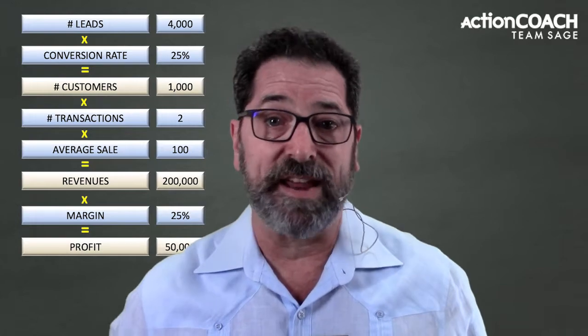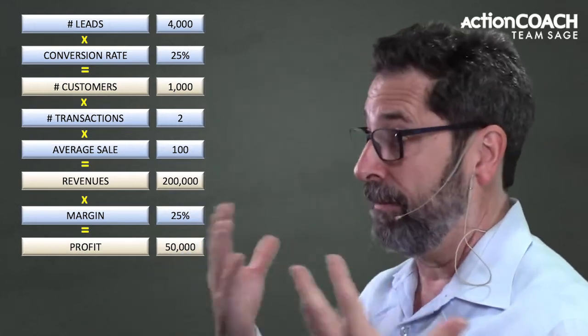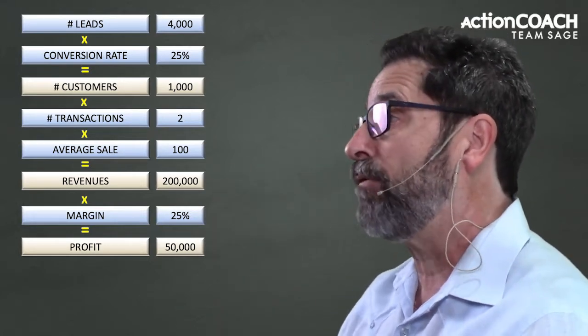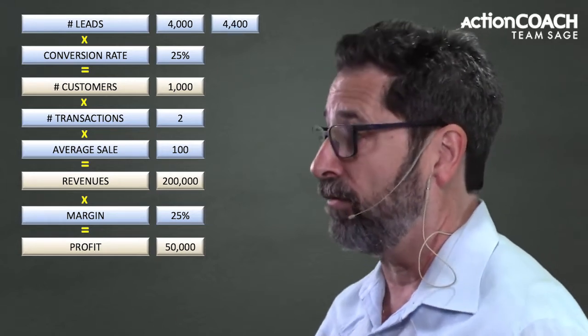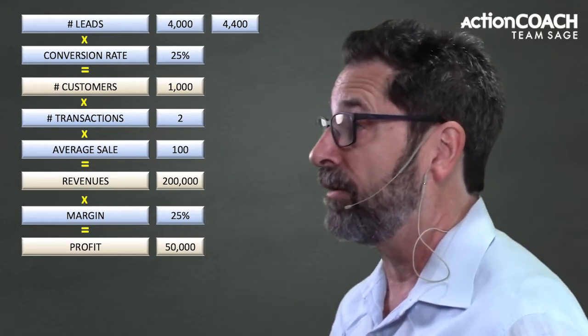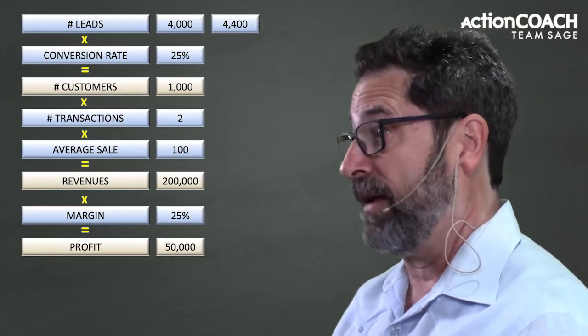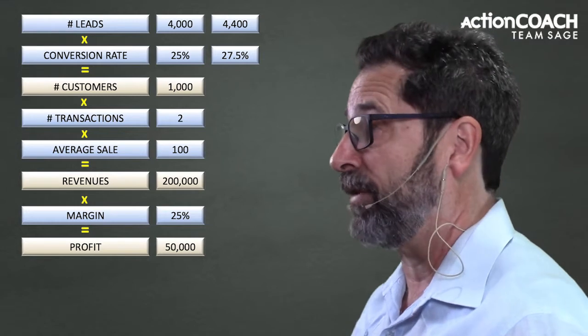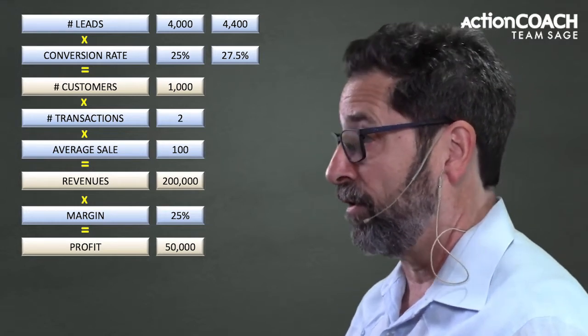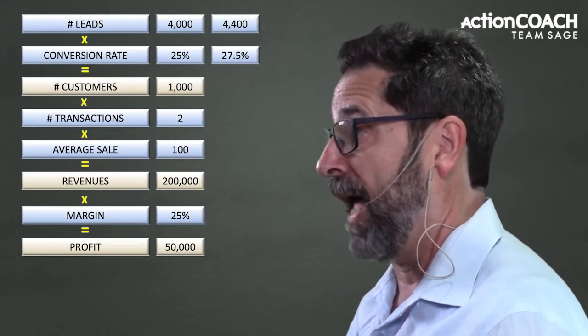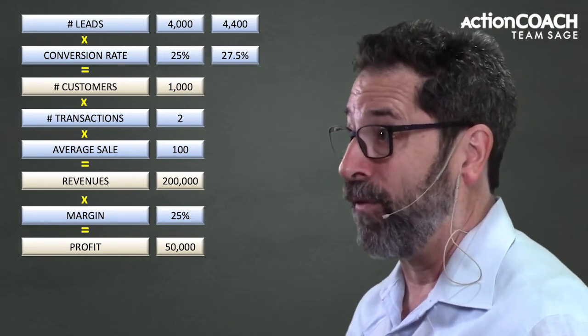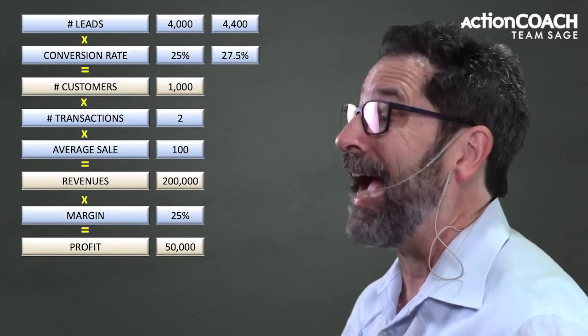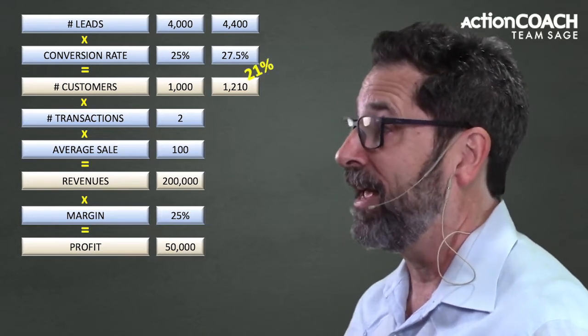Why is it important to split this up? If we focus on each area and grow each by just 10%: our 4,000 leads grow to 4,400; our 25% conversion rate rises by 2.5% to 27.5%. If you raised customers alone by 10%, you'd have 1,100. But multiplying 4,400 times 27.5%, you actually get 1,210 — a 21% increase in customers. This is why it's so important to break these down and focus on each one.